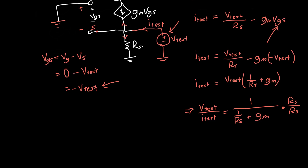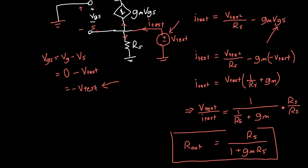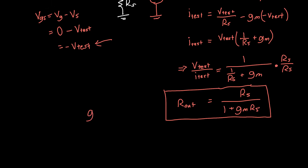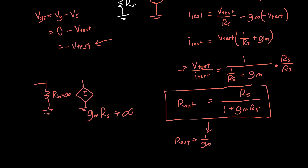Multiplying numerator and denominator by RS to simplify, R_out = RS / (1 + GM·RS). This is the final answer for output resistance. Notably, if we use this as a buffer where GM·RS is large, taking the limit as GM·RS approaches infinity gives R_out approaching 1/GM — generally a very small value. So the common drain amplifier has infinite input resistance, gain ≈ GM·RS/(1 + GM·RS) near unity, and a small output resistance RS/(1 + GM·RS).